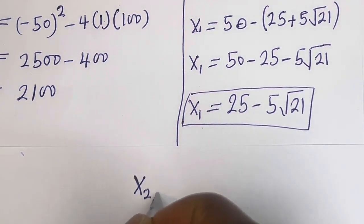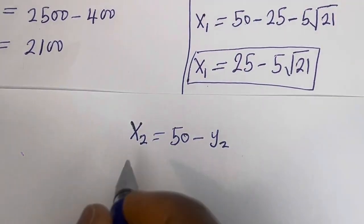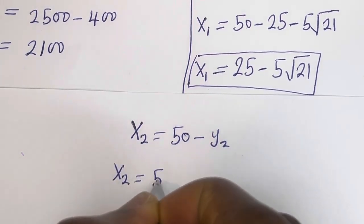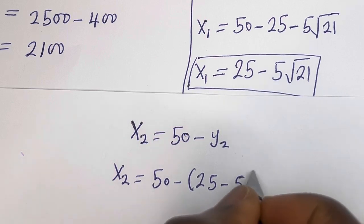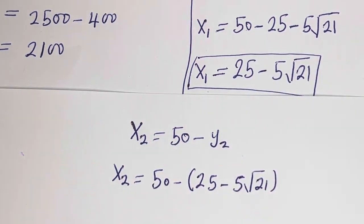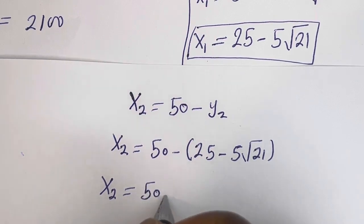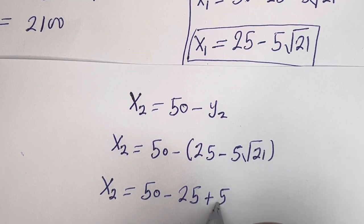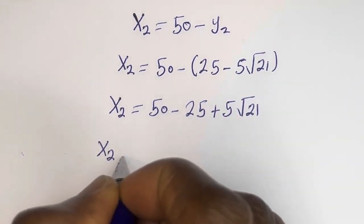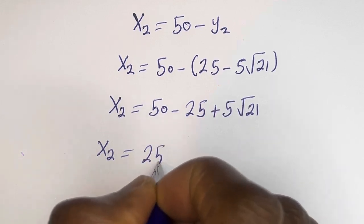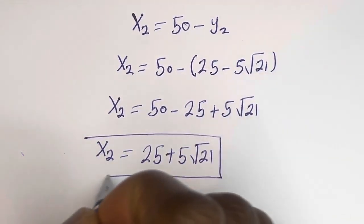Now let's solve for x2. x2 is equal to 50 minus y2, which is 25 minus 5 square root of 21. So x2 is equal to 50 minus 25 plus 5 square root of 21, giving x2 is equal to 25 plus 5 square root of 21.